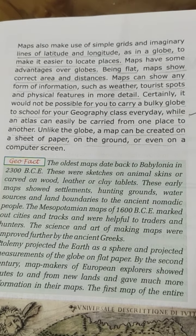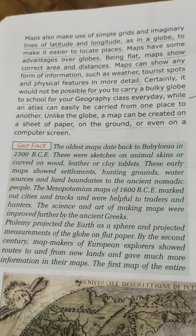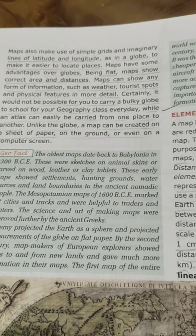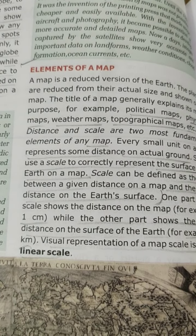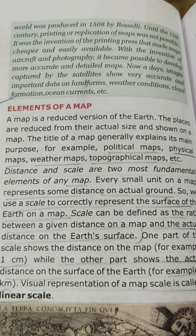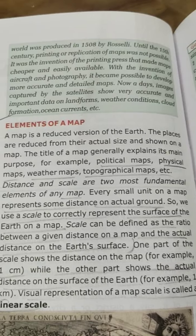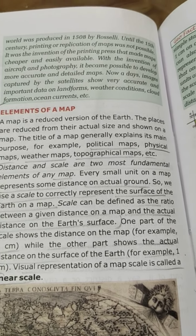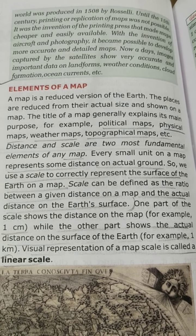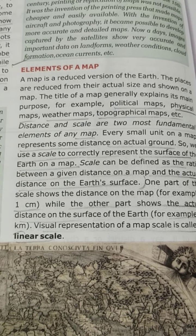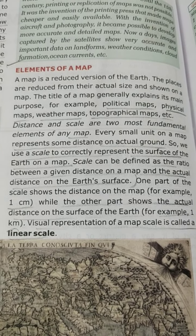Unlike the globe, a map can be created on a sheet of paper, on the ground, or even on a computer screen. Next, we'll see the elements of a map. A map is a reduced version of the earth — places are reduced from their actual size and shown on a map. The title of a map generally explains its main purpose, for example: political maps, physical maps, weather maps, topographical maps, etc.